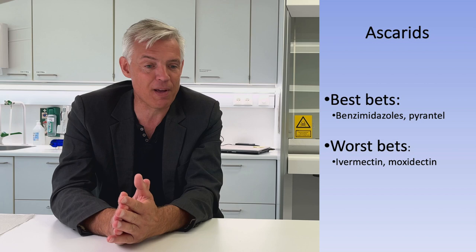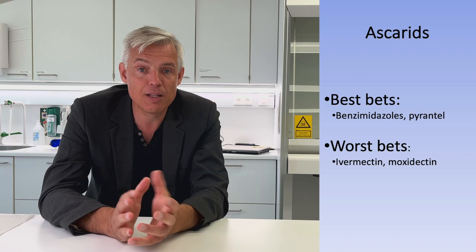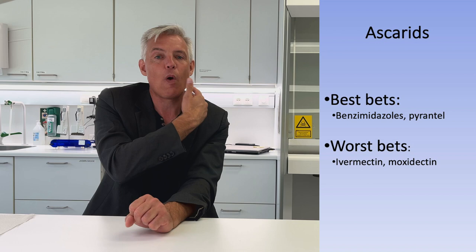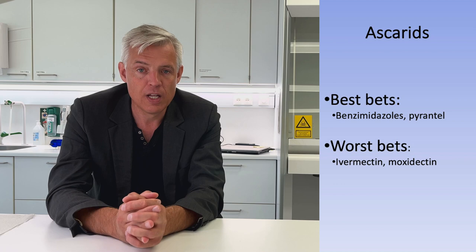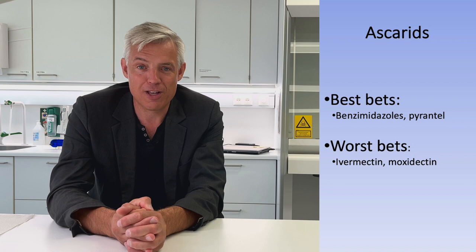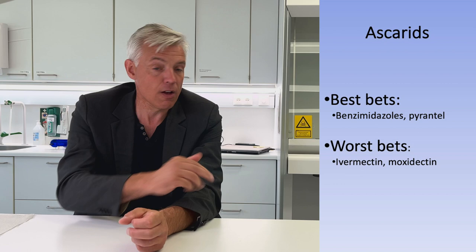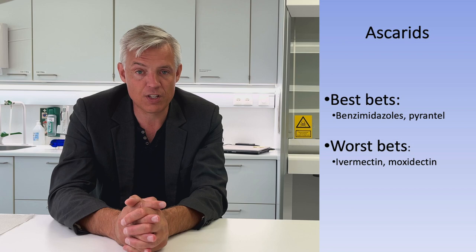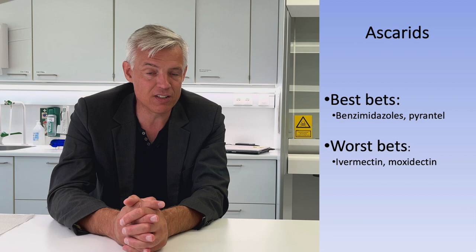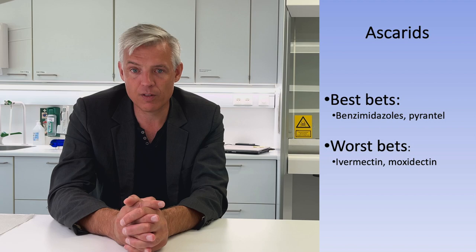Moving on to ascarides: the best bets are benzimidazoles and pyrimidines. The worst bets are the macrocyclic lactones — there is widespread resistance in ascarides to ivermectin and moxidectin all over the world. No matter where studies are conducted, resistance is found. The other two classes appear to be doing okay, but there are recent reports of resistance to those as well, so efficacy should always be checked regardless of which product is prescribed.